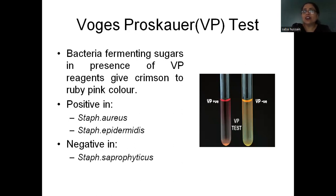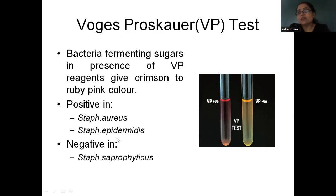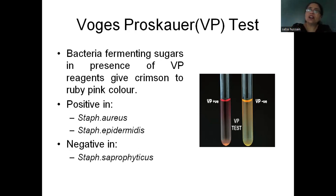Coming to the Voges-Proskauer test: if more acids are produced, they can act on the Voges-Proskauer reagent and give a crimson to ruby pink color. Voges-Proskauer negative will show no color change; positive will show crimson or pink color. Voges-Proskauer is positive in Staphylococcus aureus and epidermidis — though epidermidis was methyl red negative, so it could not ferment glucose enough for methyl red but is positive in Voges-Proskauer. I am not going into the full procedure here — we want to know which organism is positive and which is negative.